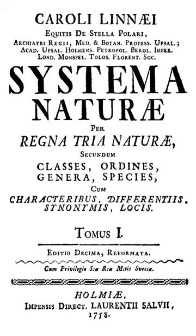The orders and classes of plants, according to his Systema sexuale, were never intended to represent natural groups but only for use in identification. They were used in that sense well into the 19th century. Linnaeus's taxonomy of minerals has long since fallen out of use. In the 10th edition of 1758, the classes were: Classis 1 Petrae, Classis 2 Mineralia, and Classis 3 Fossilia.